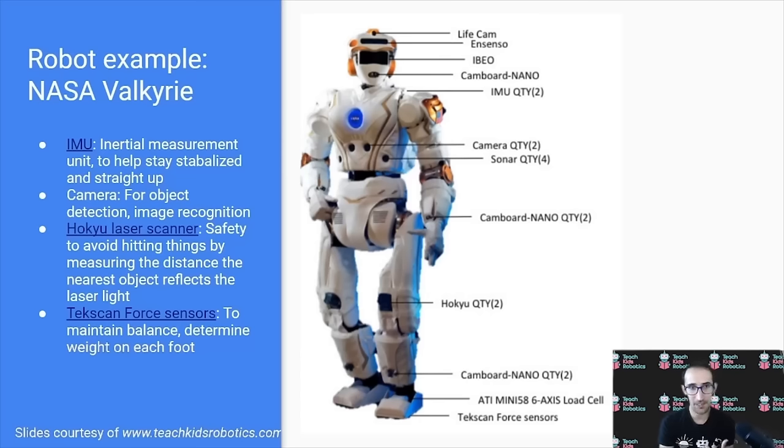It uses a camera for object detection and to determine if the path in front of it is open. It uses a laser scanner to determine the distance from objects around it so that it doesn't actually run into anything. And it uses force sensors in its feet to determine whether or not both of its feet are on the ground.